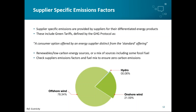Supplier-specific emissions factors are next in the emissions factor hierarchy. These are provided by energy suppliers for the different energy products they supply — these may be their standard energy products through their standard fuel mix, or a specific green energy product or tariff. The GHG protocol defines green tariffs as a consumer option offered by an energy supplier distinct from the standard offering, which is fairly vague and open to interpretation. In practice, these include a variety of tariffs which might be renewable, low carbon, or a mix of fuel sources, sometimes including fossil fuels. It's important to check suppliers' emissions factors and fuel mix before claiming your green tariff is zero carbon.